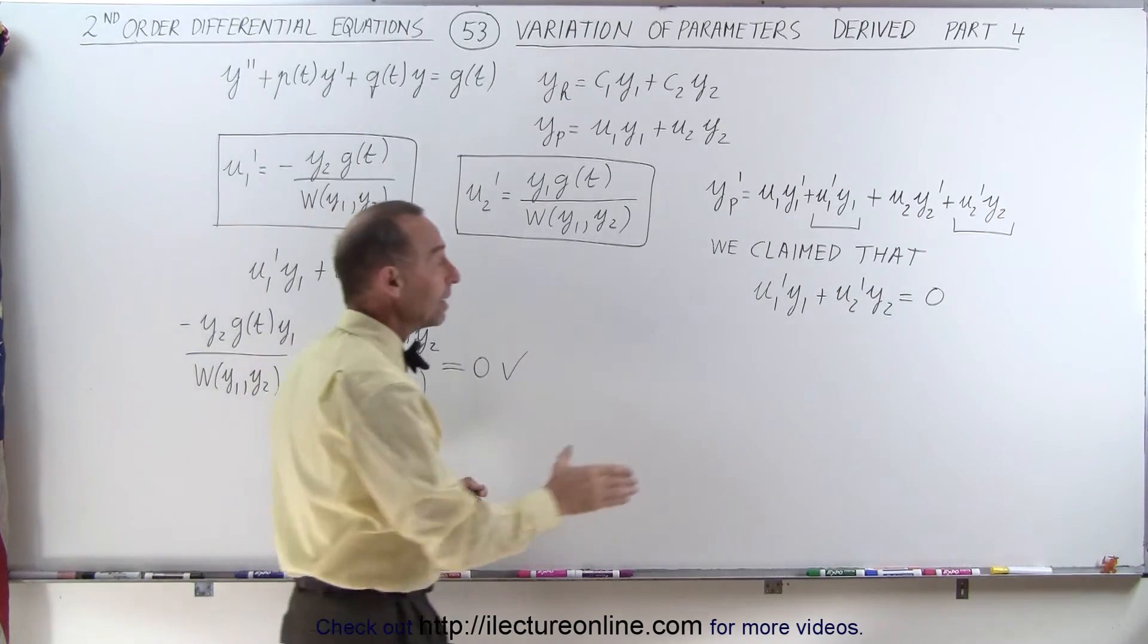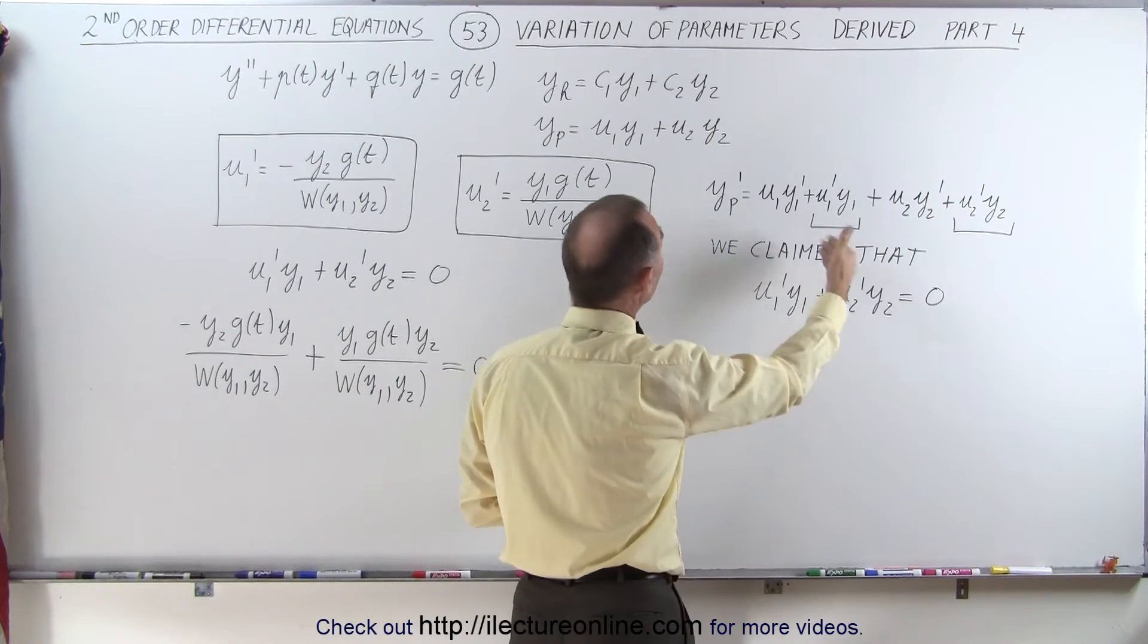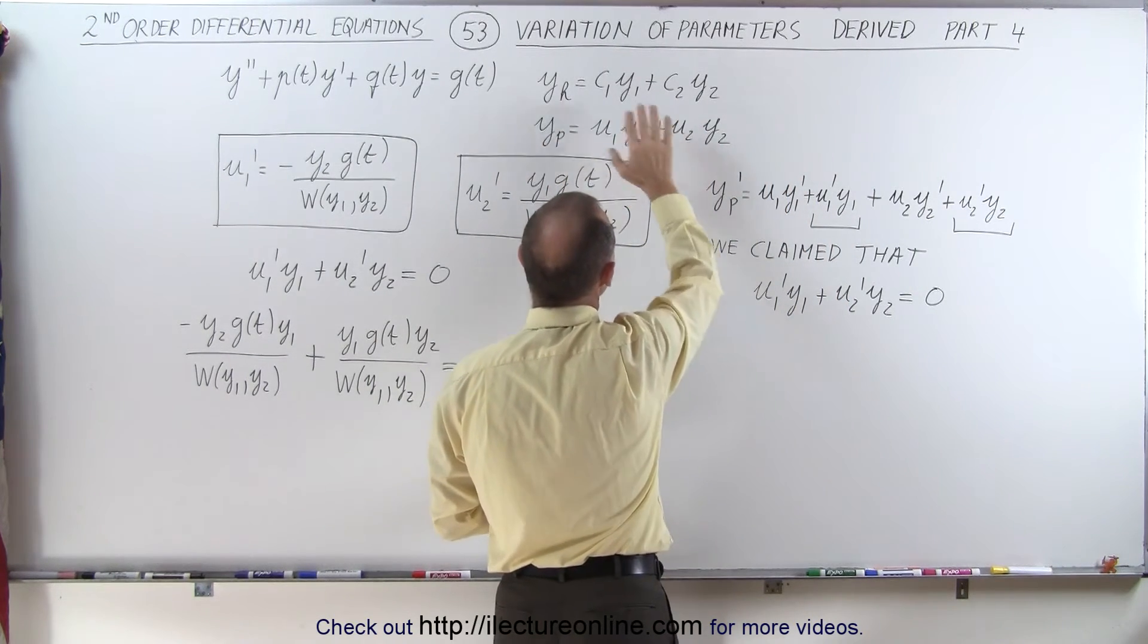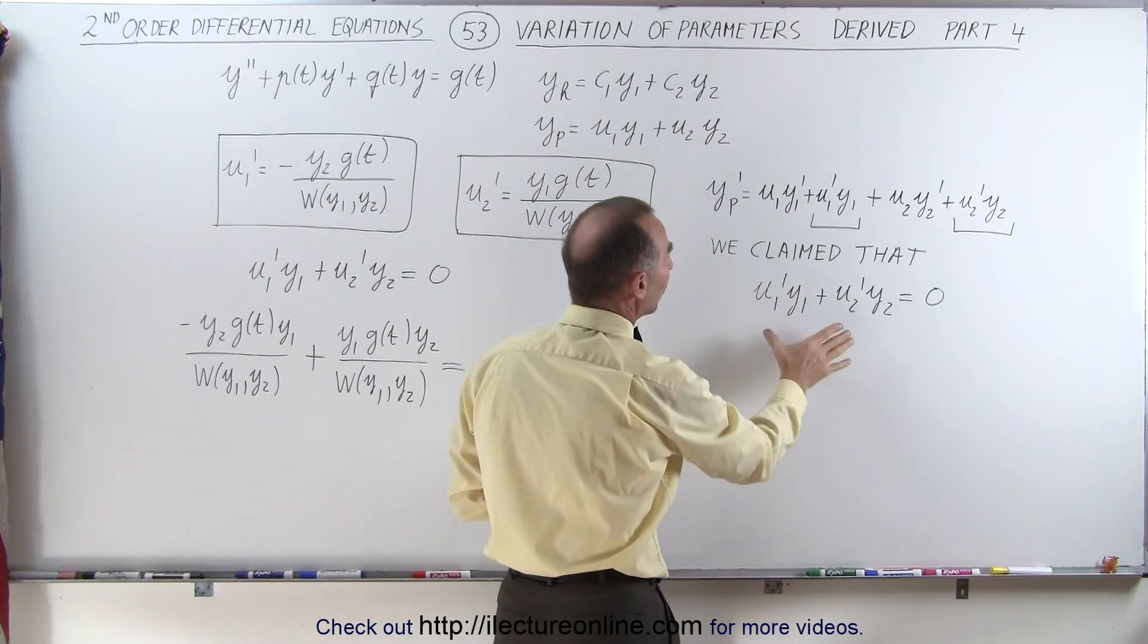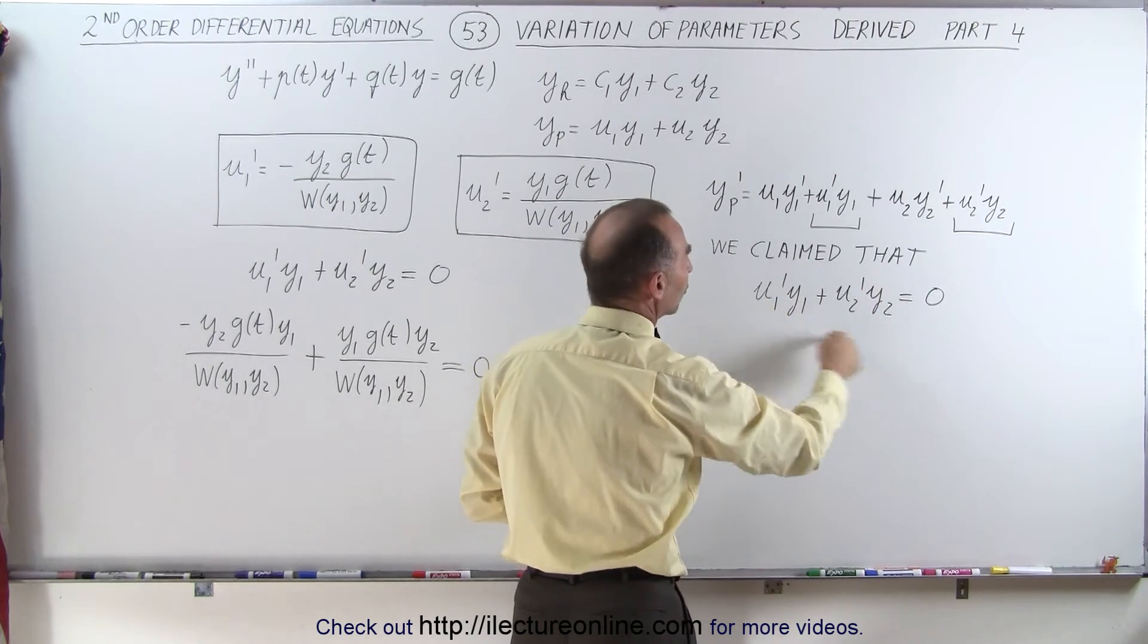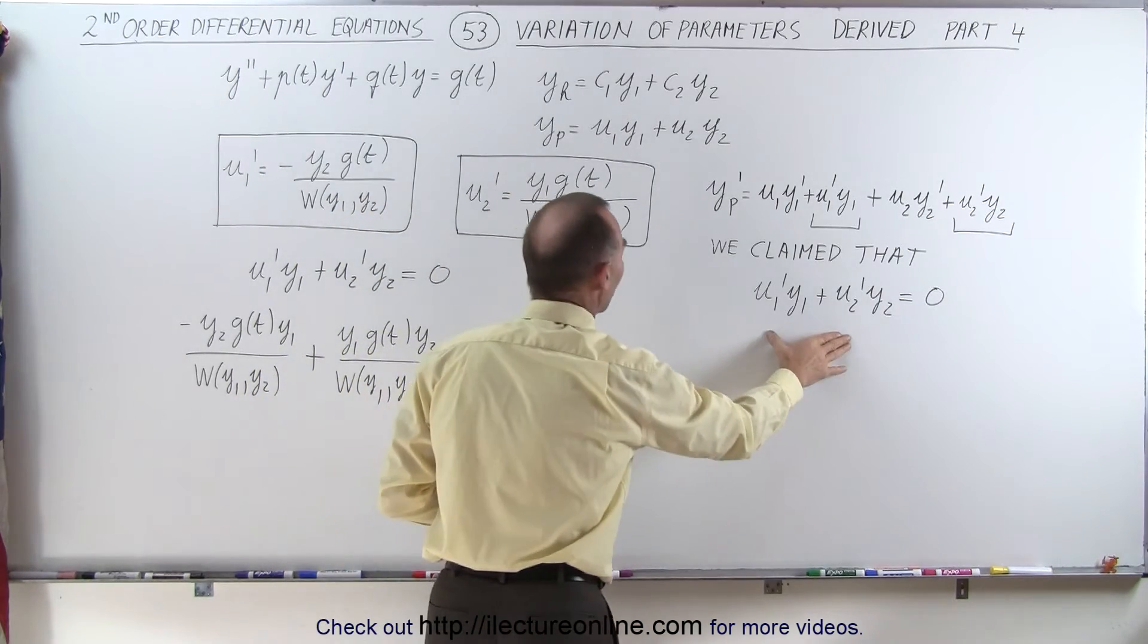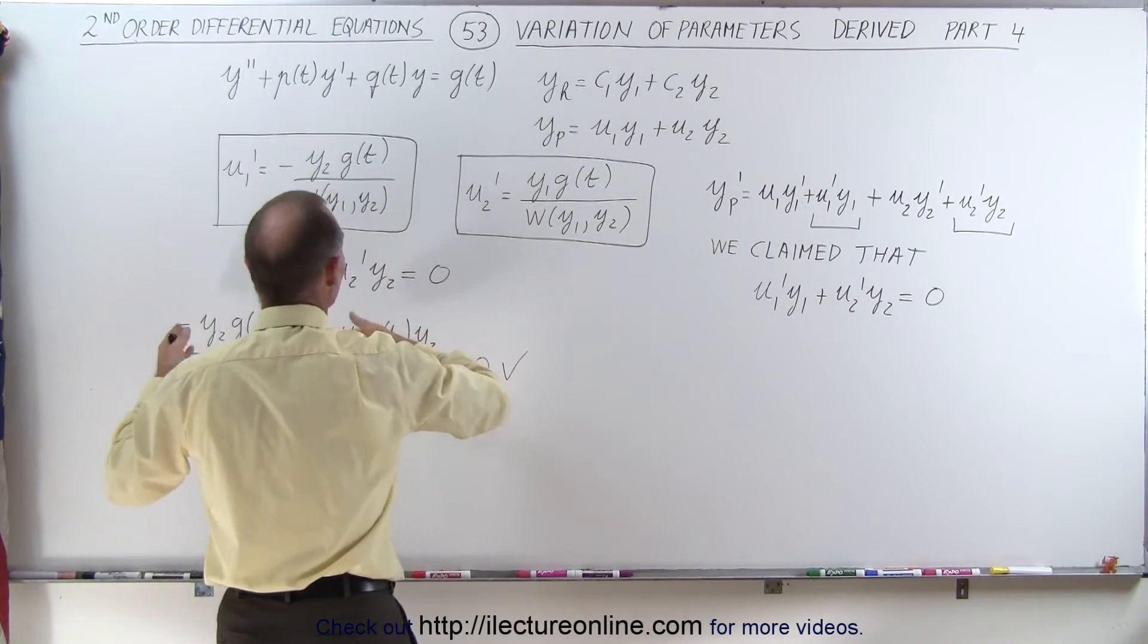So that initial claim that made finding this method, showing how to find u1 and u2 in the variation of parameters method, it made it a lot easier by making this assumption. Of course, once you work it out without making this assumption, you can later on realize...